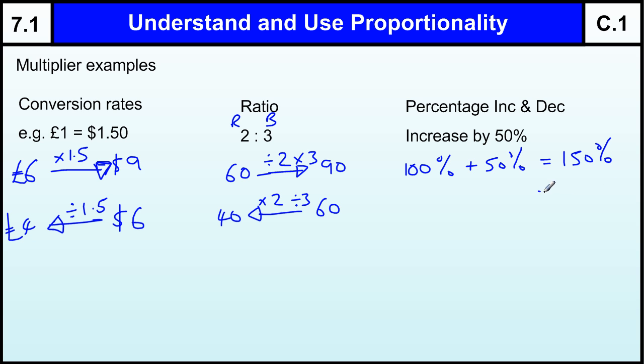But increasing by 50%, if I've got my original 100%, and I increase by 50%, I now have 150%. And 150% is the same as times by 150 over 100, or 1.5. So if I want to increase something by 50%, I need to times by 1.5. If I want to decrease something by 10%, I would times by 1.1, because it would be 110%.